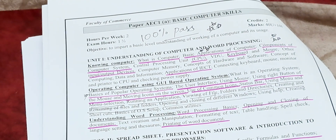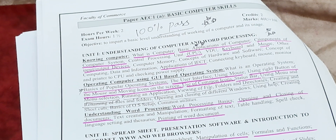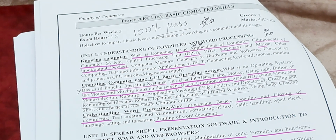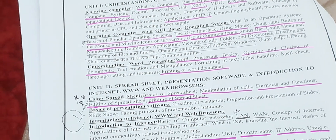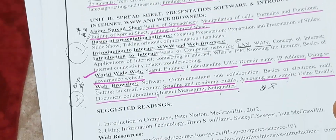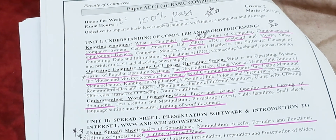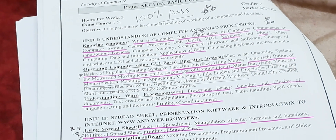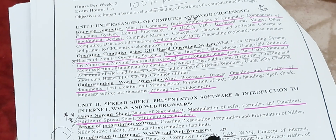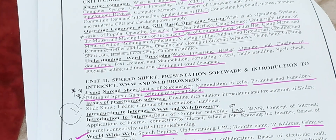We have discussed both units in detail — how to learn answers importantly. These are the most important questions according to me. If you learn these, you will get very good marks — above 90 percent — and you can score an O grade. Thank you so much for watching.